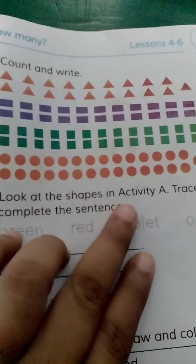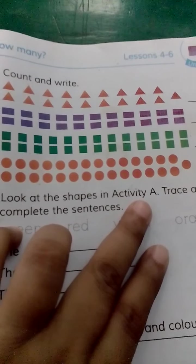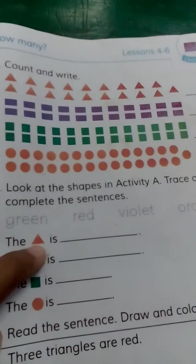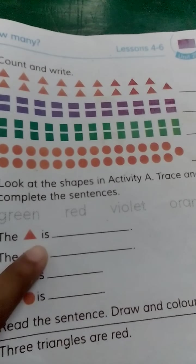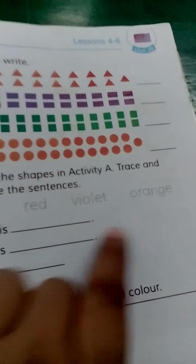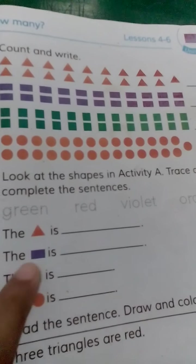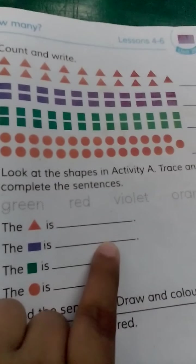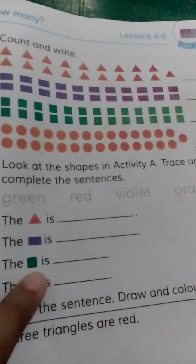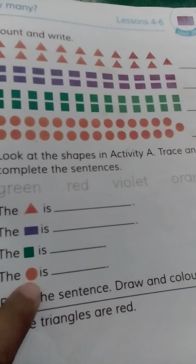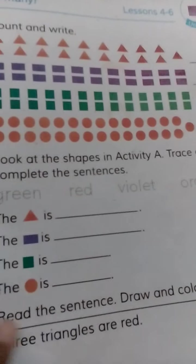Go to Section B — look at the shapes in Activity A. We'll see the shape, then trace and complete the sentences. It's a triangle and this color is orange — the triangle is orange. It's a rectangle and this is violet. There is also yellow. The circle is blue. The square is green — you can see it is green. The circle is red — you can see the circle is red.